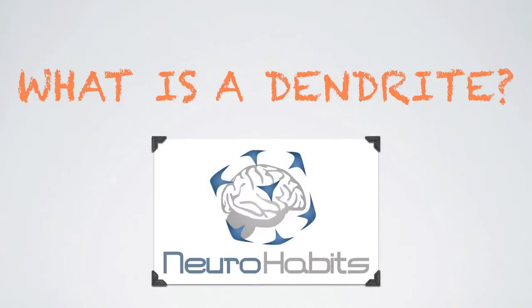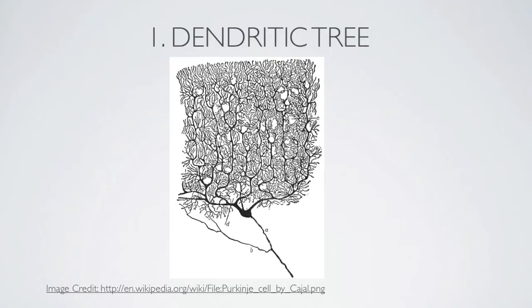What is a dendrite? Dendrites are the part of the neuron that receive most of the incoming electrical signals. They will transmit this signal to the cell body. Some dendrites have also been found to be able to release neurotransmitters.